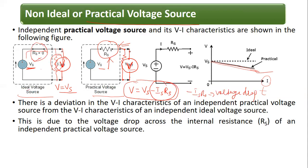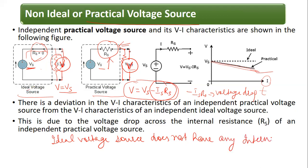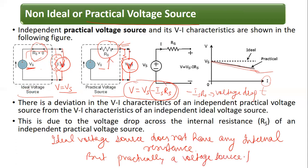In the ideal case, the voltage source has zero internal resistance. An ideal voltage source does not have any internal resistance. But practically, a voltage source possesses a negligible internal resistance.